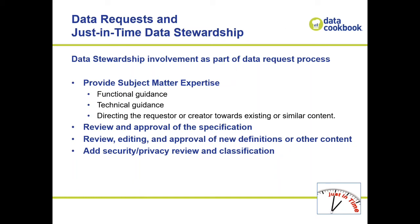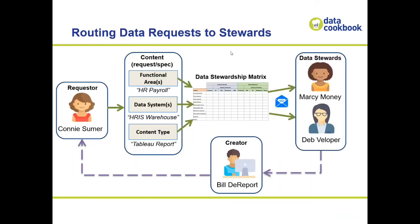Stewards also handle security or privacy review and classification — for example, flagging that you can't send out a report with social security numbers or salary data on it. Here's an example of how routing might work: requester Connie wants an HR payroll report out of the HRIS warehouse in Tableau. Those three things — functional area, data system, and content type — go through a routing matrix to determine the appropriate stewards, such as Marcy as the functional steward and Deb as the technical steward, so the system knows how to route to them.